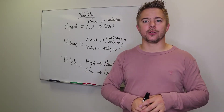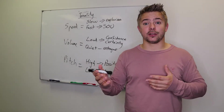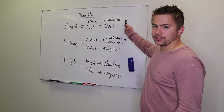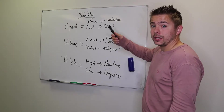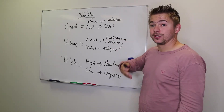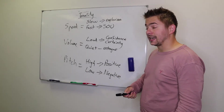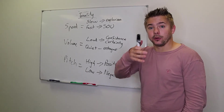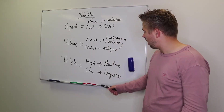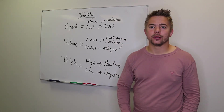Listen to an expert who's selling and find out how they're using their tonalities and where. It's simple: anything you need to emphasize, say it slowly. When you want to build urgency and excitement, speak a little bit faster. Showing confidence and certainty — speak loud. If you want a bit of intrigue, go a little bit quieter. And for positives, go high pitch; negatives, low pitch. Simple as that.